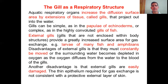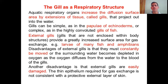Gills are a respiratory structure in aquatic animals such as fish. They increase the diffusion surface area by extension of tissue. These gills project out into the water. Gills can be simple — as in the papulae of echinoderms, which are projecting structures — or highly convoluted as in fish. External gills, which are not enclosed within the body structure, provide a great surface area for gas exchange and are usually present in larvae of many fishes and amphibians. The disadvantage of external gills is that they need to move constantly.